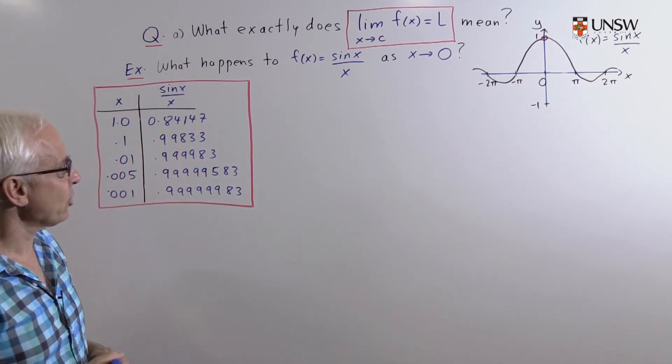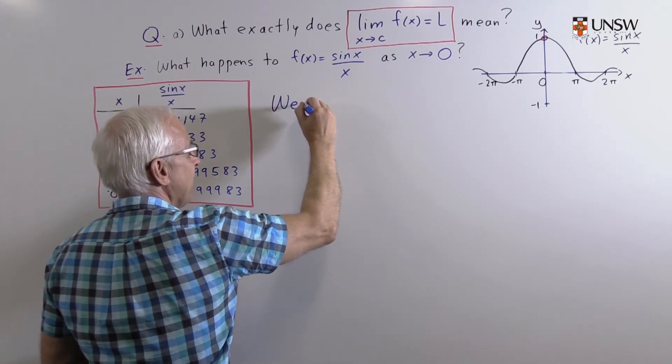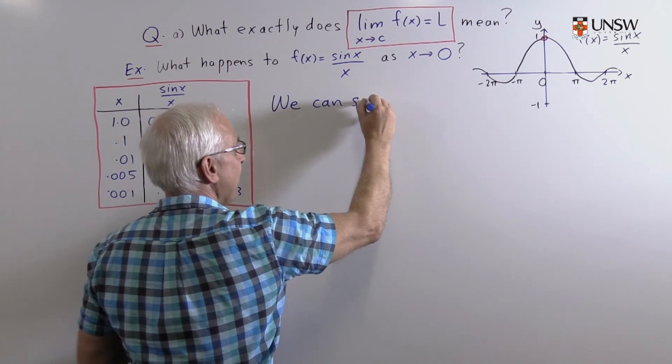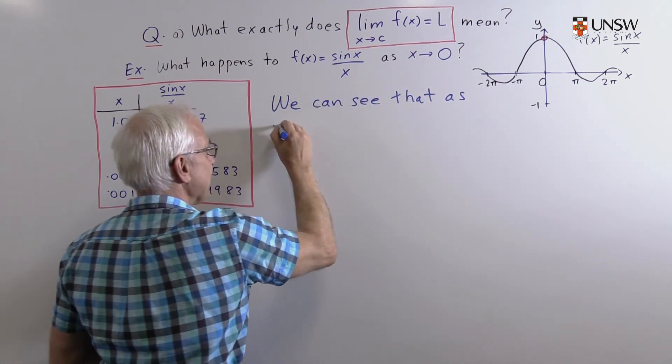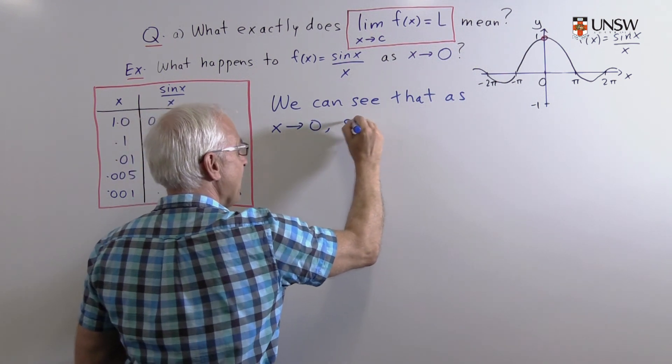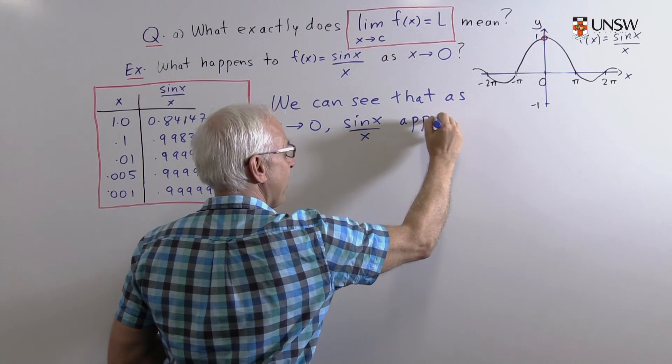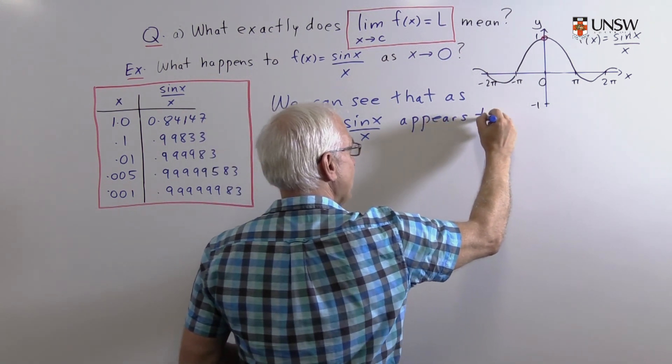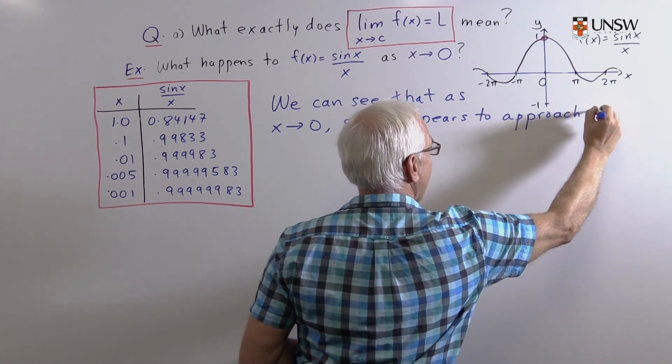Intuitively or geometrically, we can see that as x approaches zero, sine x over x appears to approach the value one.